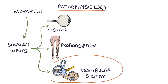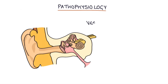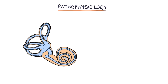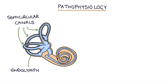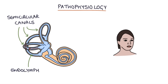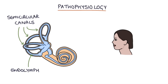The vestibular system is the most important sensory system to understand when learning about vertigo. The vestibular apparatus is located in the inner ear. It consists of three loops called the semicircular canals that are filled with a fluid called endolymph. These semicircular canals are oriented in different directions to detect different movements of the head. As the head turns, the fluid shifts within the canals, and this shift is detected by small hairs called stereocilia found in a section of the canals called the ampulla.